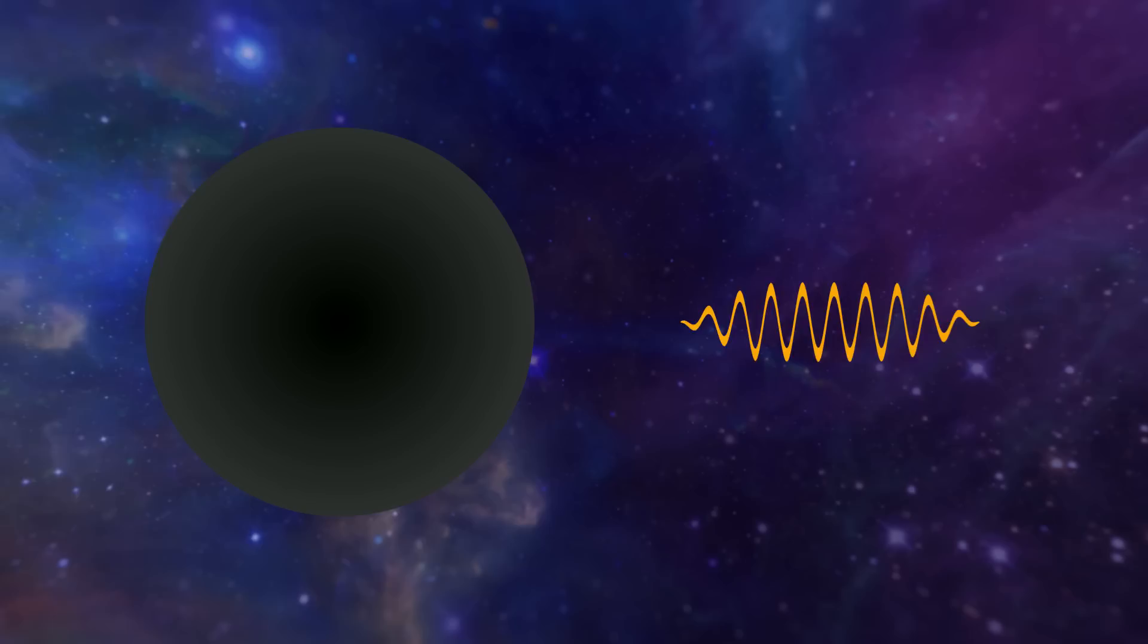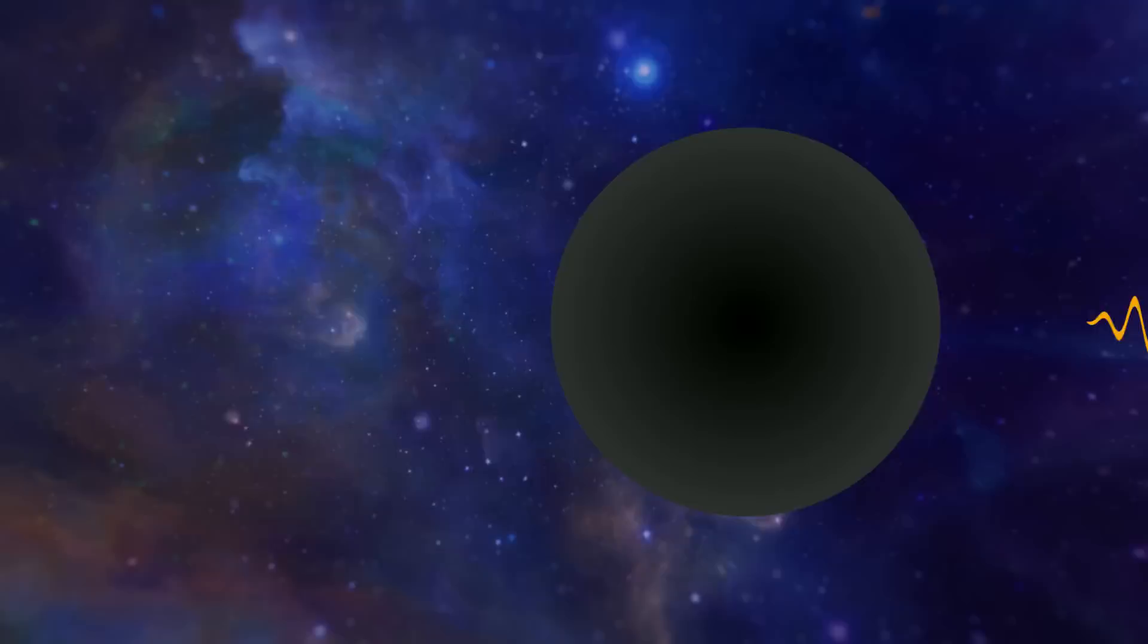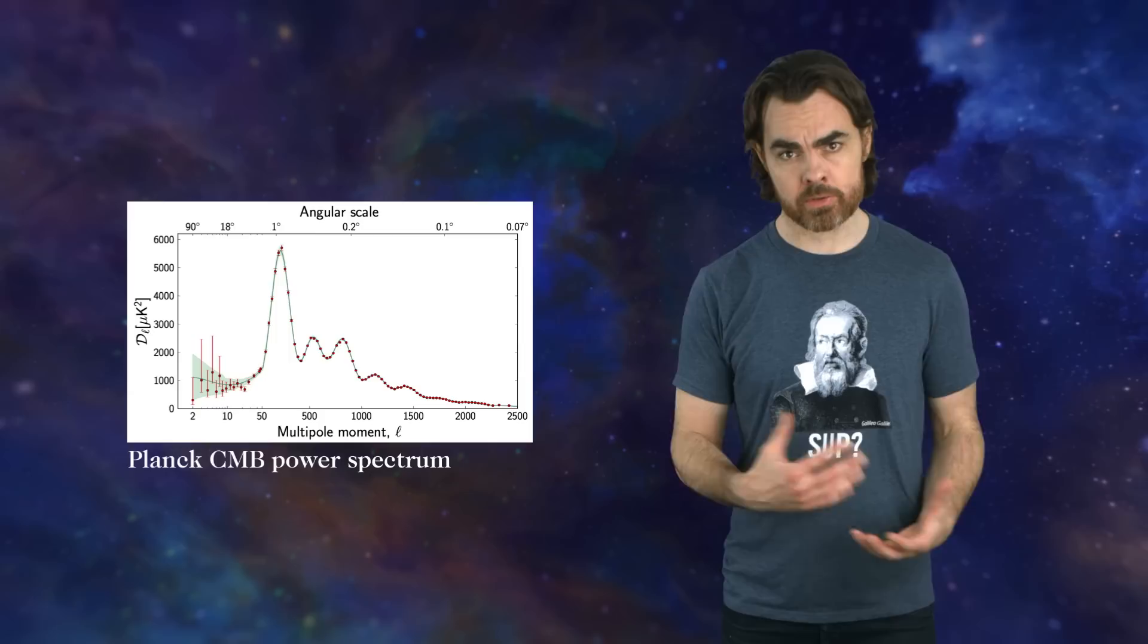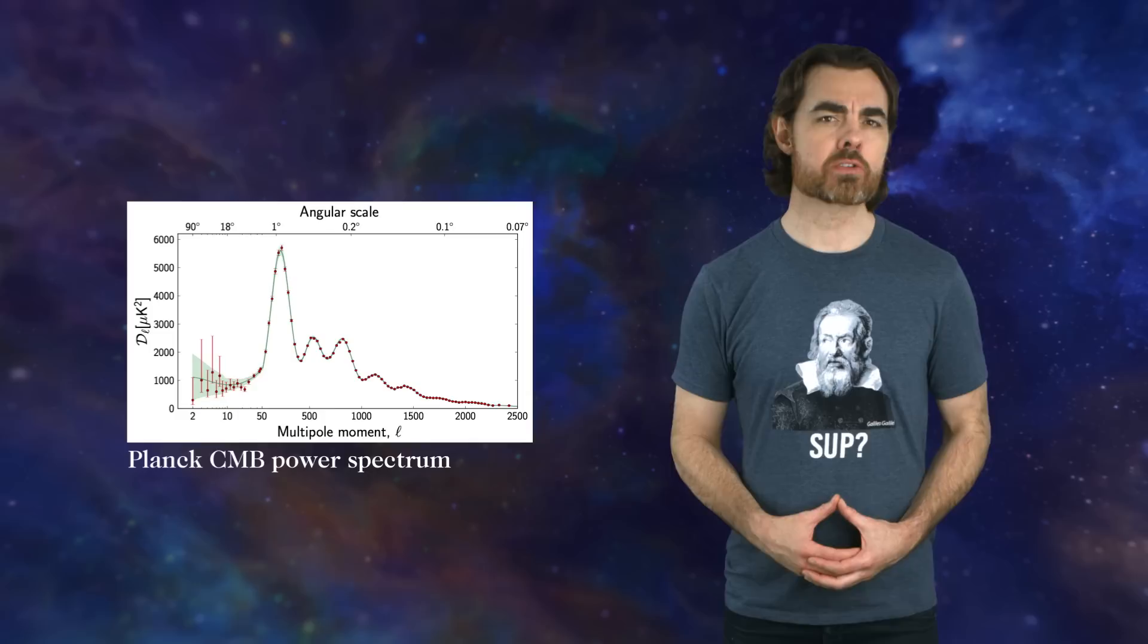The state of the oscillations at the moment of that release is imprinted on the CMB in those speckles. We usually show the distribution of speckle sizes with what we call a power spectrum, which basically shows the abundance of speckles of different sizes. The location of these peaks tells us which oscillation modes just happened to be at their peaks at the moment